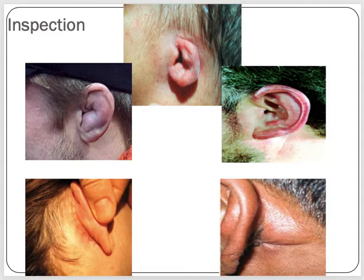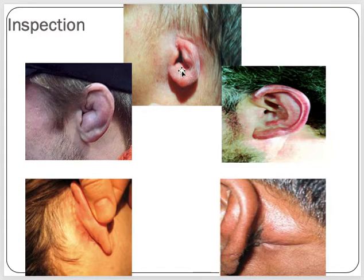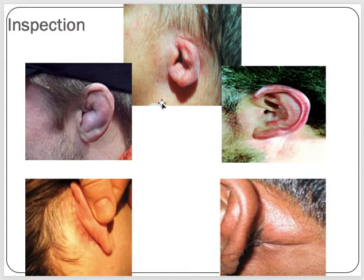On inspection, we look at the pinna — its shape, size, and any deformity. We gently pull the pinna and ask if it is sore or painful. We look at the size of the meatus — a very enlarged meatus may suggest previous mastoid surgery. We note any discharge or change in skin color of the pinna. Sometimes people have congenital atresia; diseases of the external ear will be discussed in the next lecture.